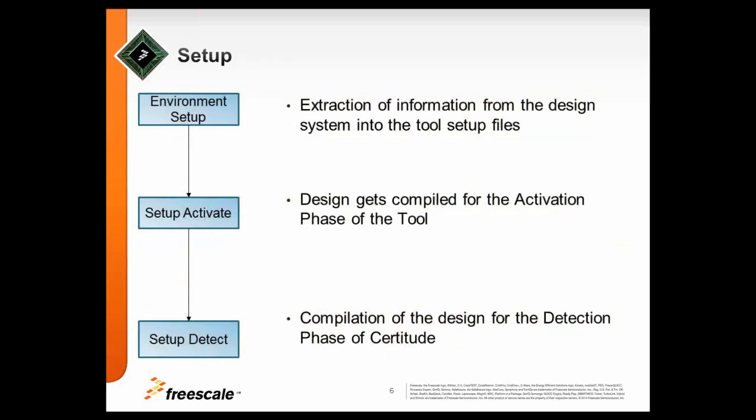Setup. These are the three steps. I combined the setup and activate, which is also covering the modeling phase mentioned before. We have a design system called Stingray, which is used in Freescale that defines the directory structure. So what we do here is get the information out from this environment into the certitude setup. Then we compile the design and do the activation, meaning the toggle coverage equivalent. And last but not least, we do the detection phase. That's where you get the value, where you see the difference between your toggle coverage and the real detection measured by certitude.